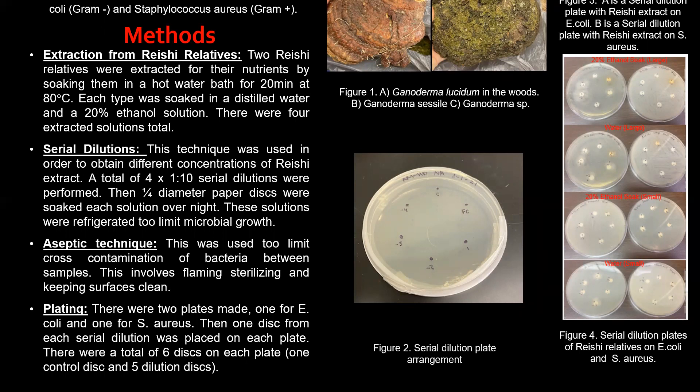Serial dilutions were performed to obtain different concentrations of reishi extract. Four 1-to-10 serial dilutions were done. I had five tubes total for each extract — one filled with 10 milliliters of full concentrate and the others filled with nine milliliters of distilled water. I transferred one milliliter from the full concentrate to tube one, mixed it, then transferred another milliliter to the next tube in successive order to dilute the concentrate. One-quarter-inch diameter paper discs were soaked in each solution overnight and then refrigerated to prevent microbial growth.